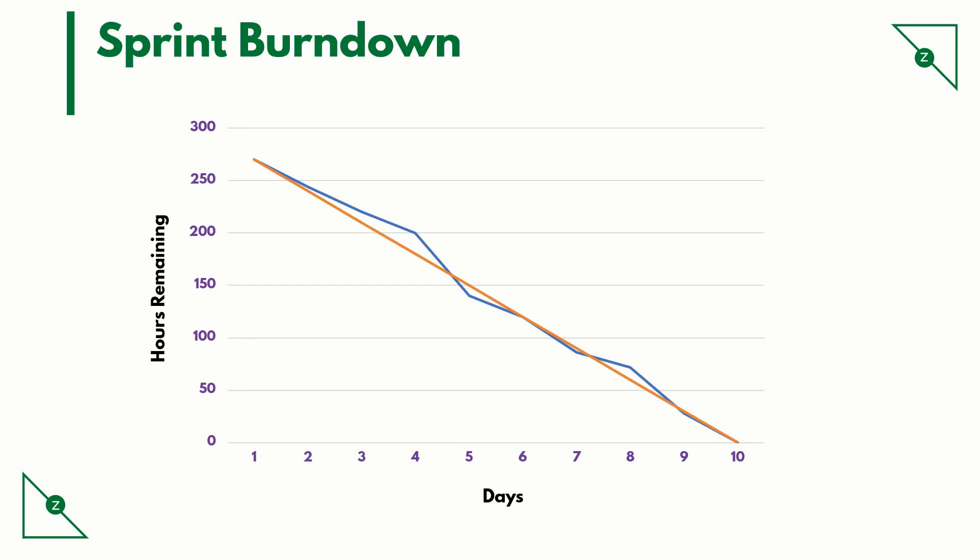Here's an example. On the y-axis, we have the hours remaining. On the x-axis, we have the days of the sprint. In this example, we have a two-week sprint. You can see that the graph starts at roughly 270 hours, which is the hours estimated by the team during sprint planning.